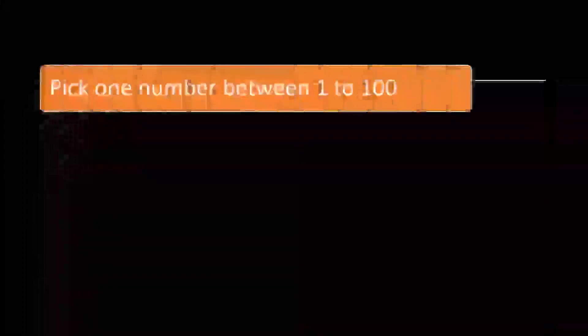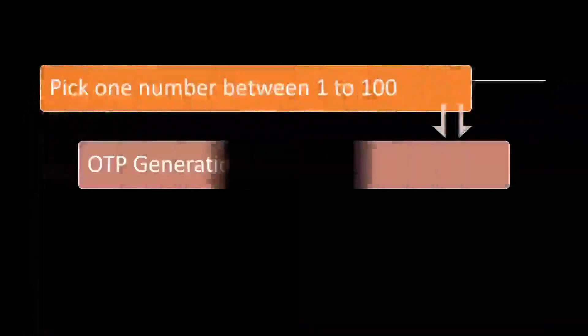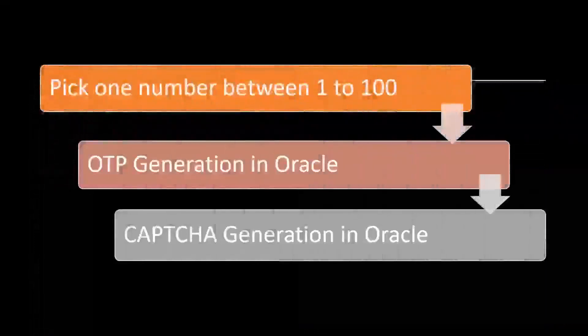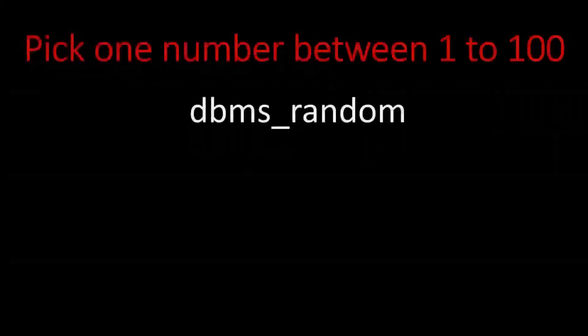Today we will see how to pick one number between a given range of numbers, and also we will see how to generate OTP and CAPTCHA in Oracle. Let us discuss one by one. Oracle provides one predefined package, that is DBMS_RANDOM. By using this package, we can able to generate a random value or a random string.